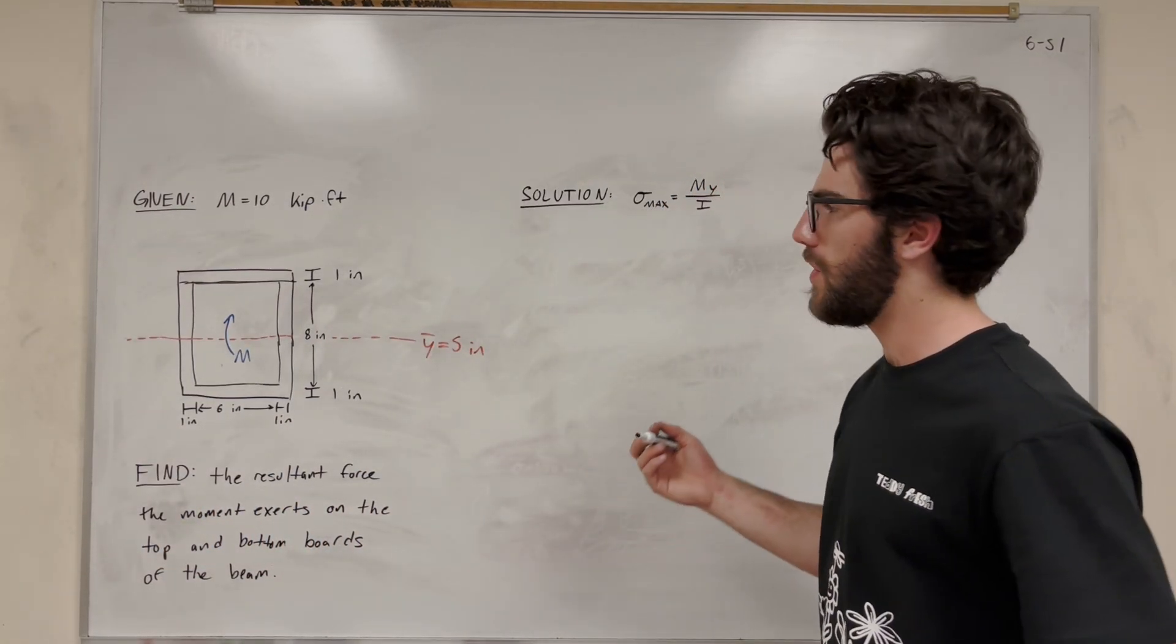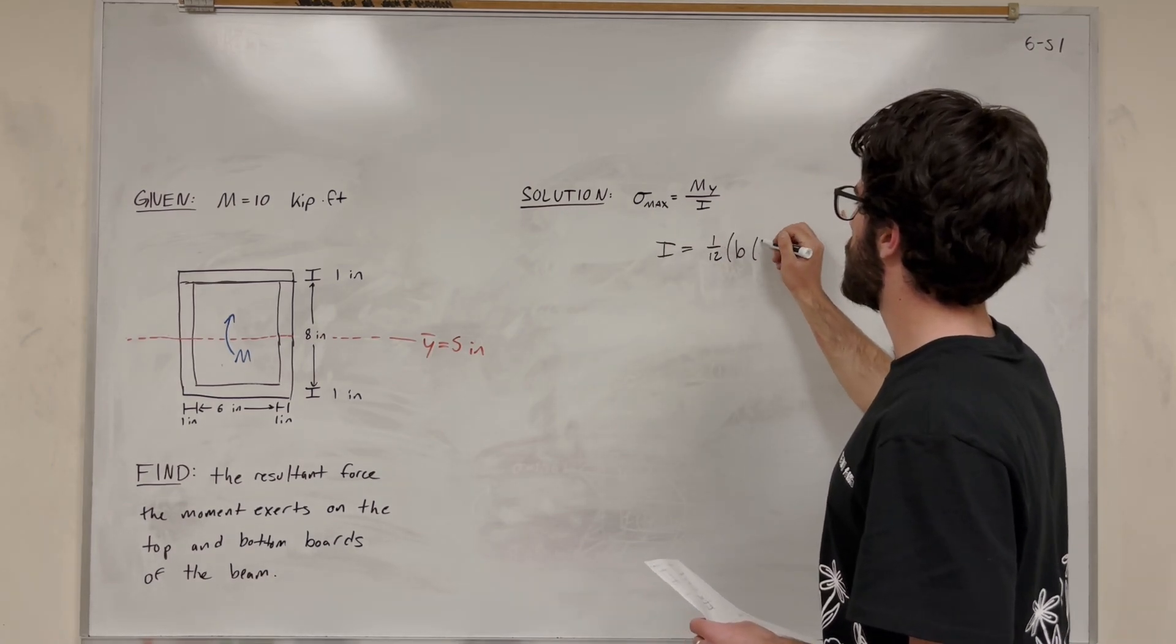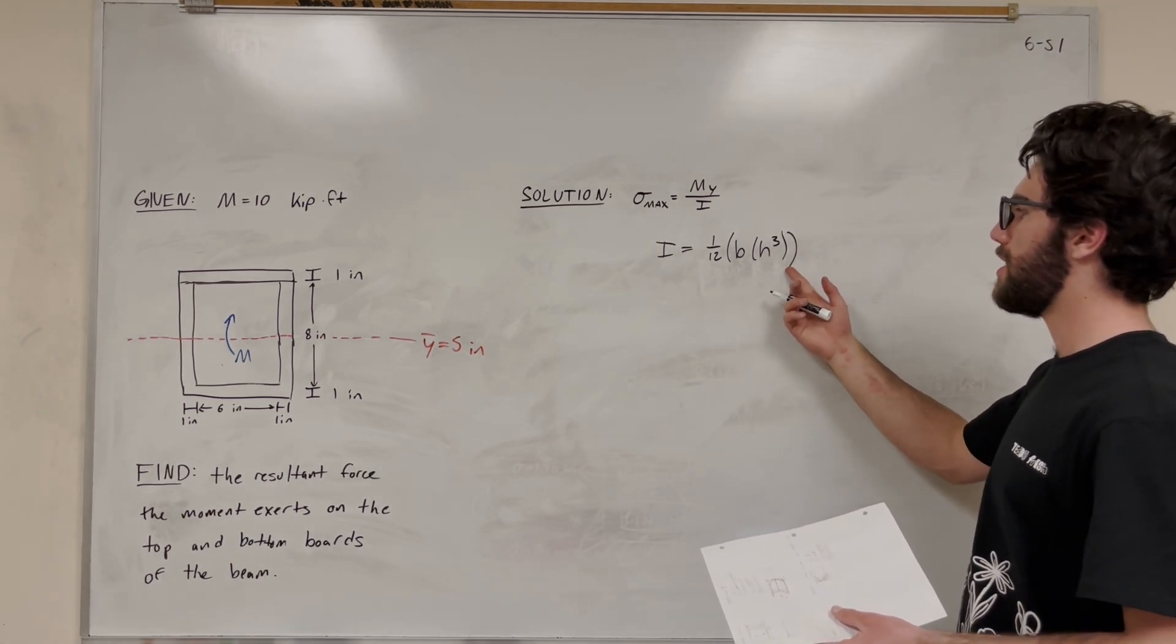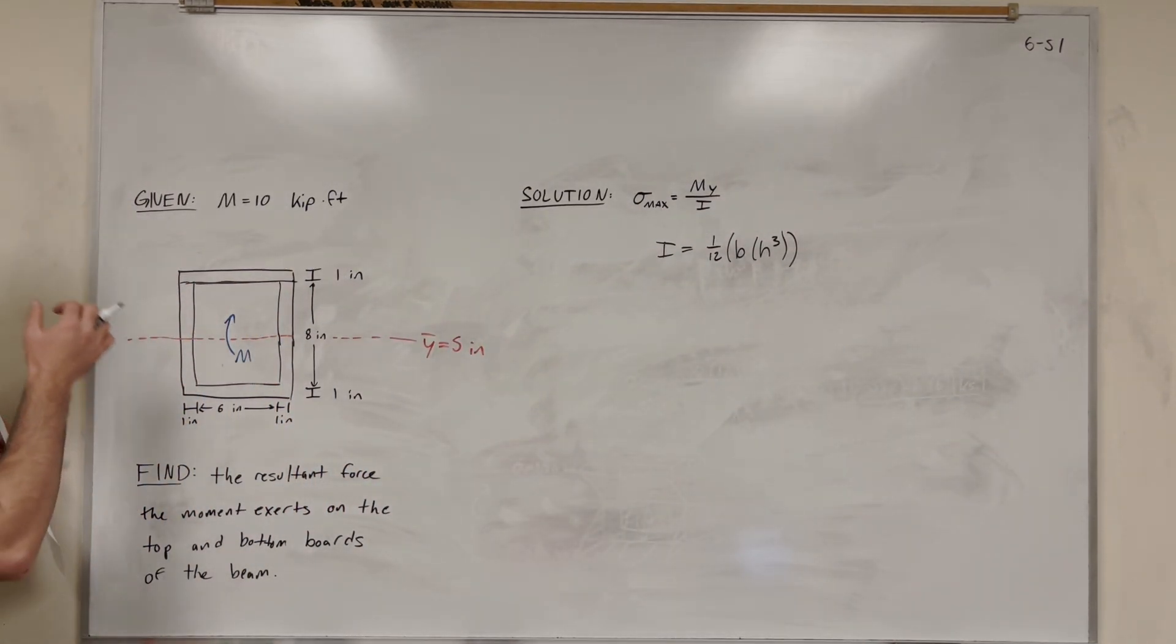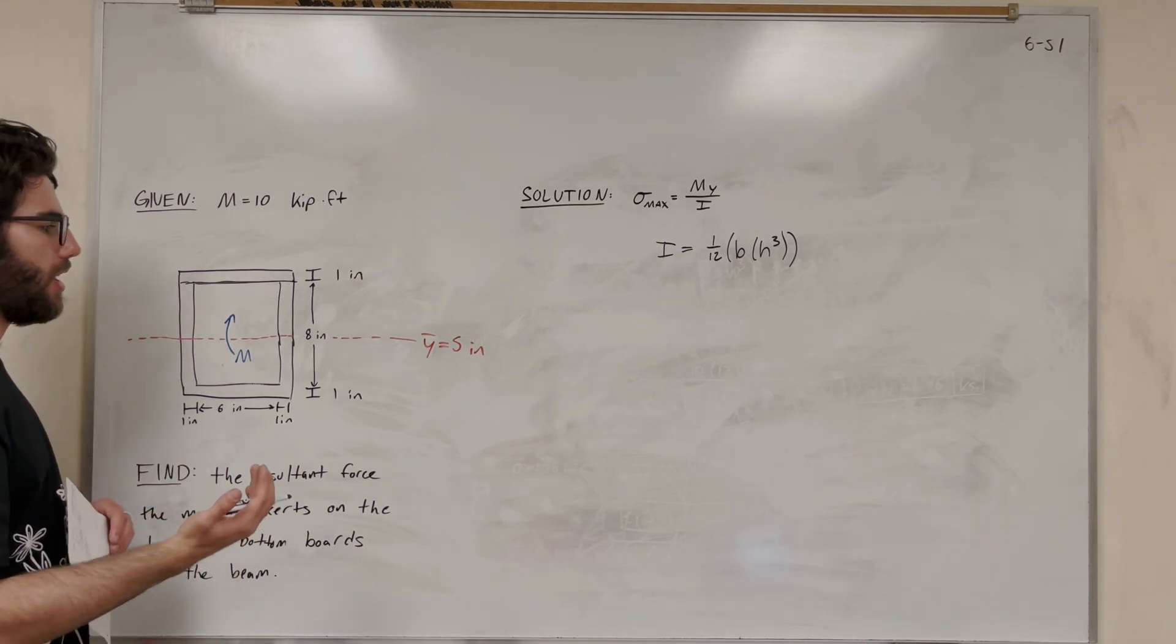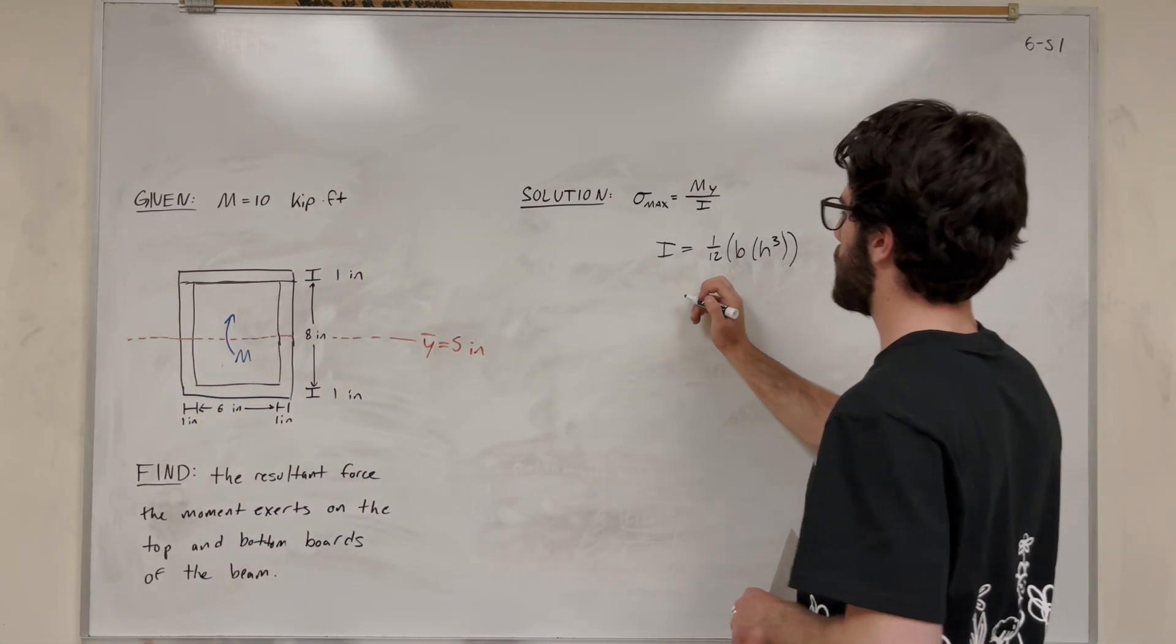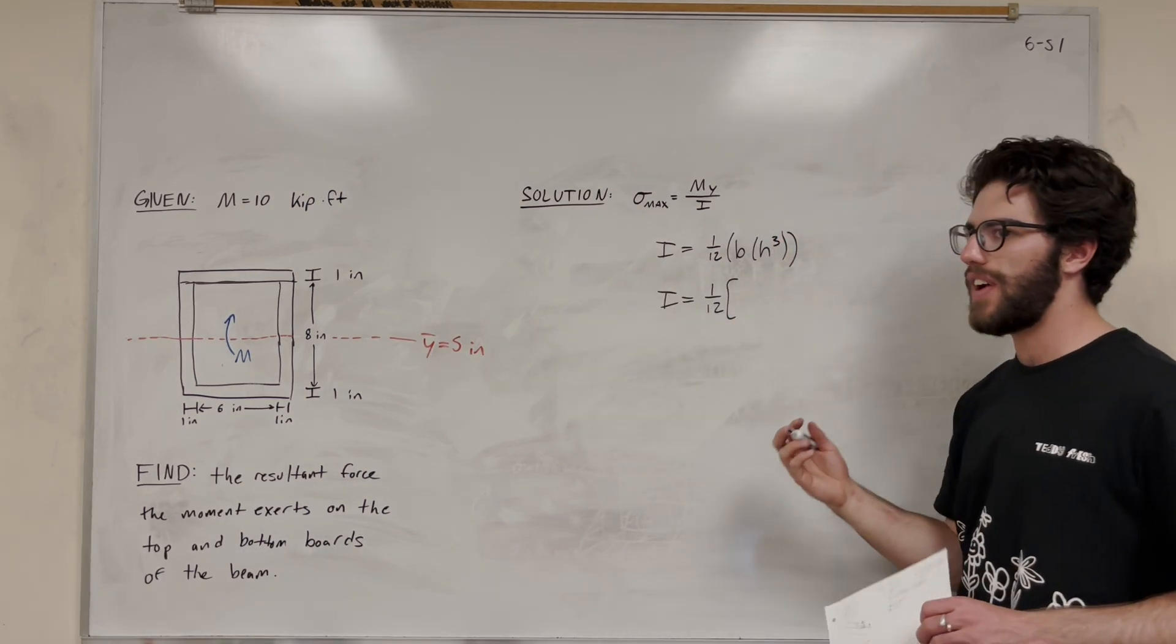So that means all we have to do is find the moment of inertia. The moment of inertia for a rectangle is 1/12 base times height cubed. We don't have to worry about the parallel axis theorem because both of our shapes lie on the center of mass. We can take the moment of inertia of the whole rectangle and subtract out the moment of inertia of the inner rectangle. We're going to use this equation twice and subtract one from the other, factoring out that 1/12.